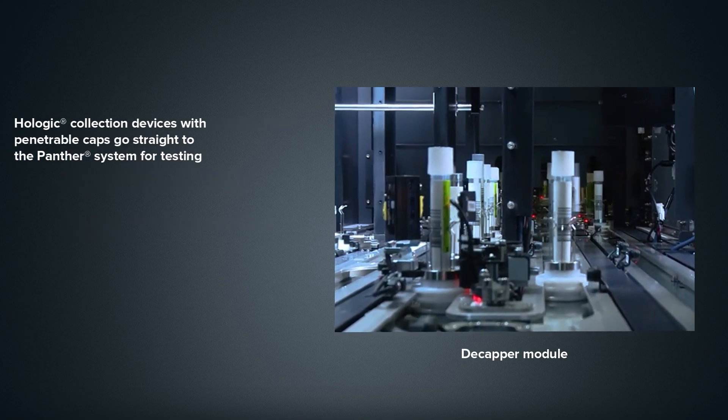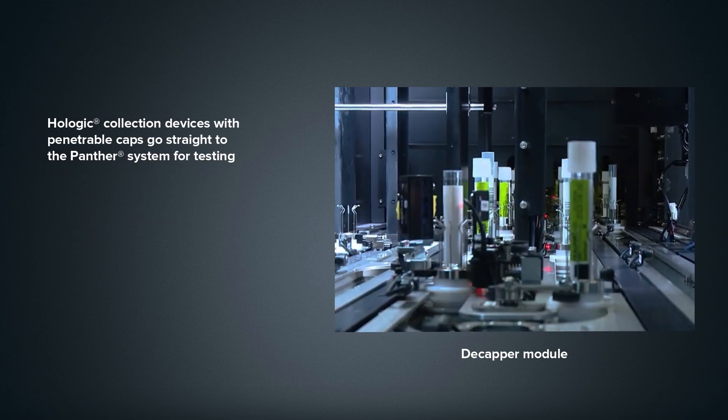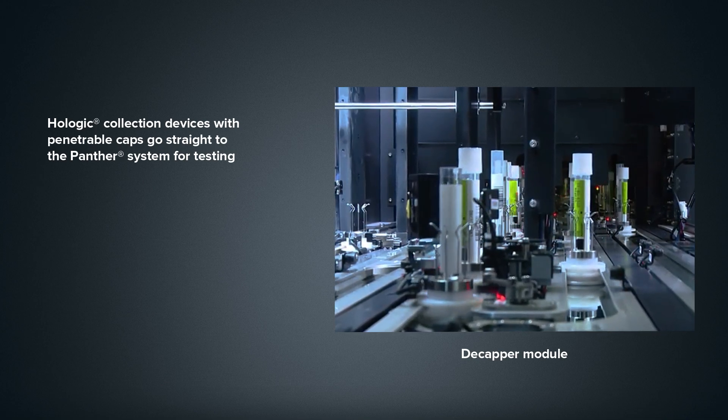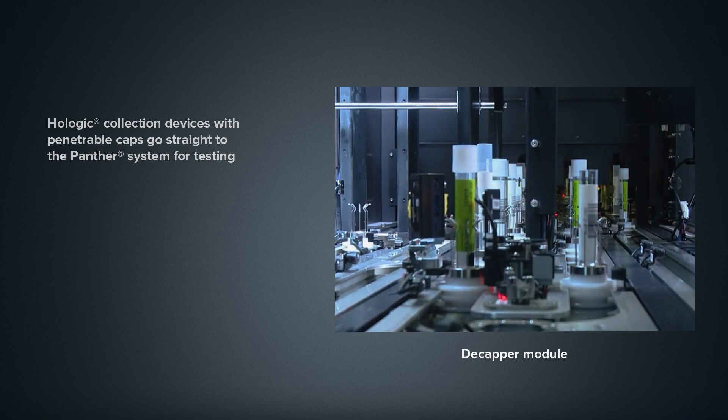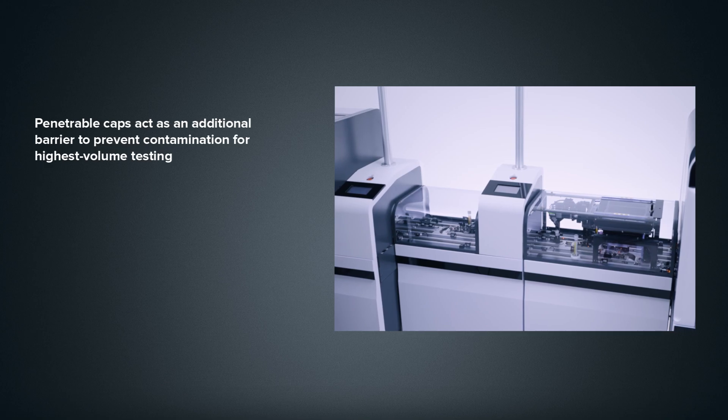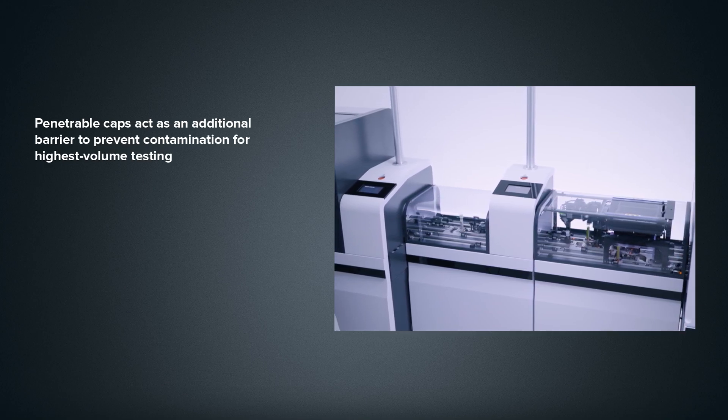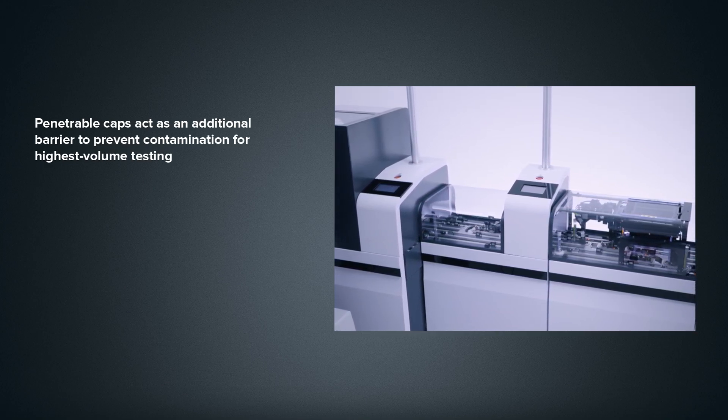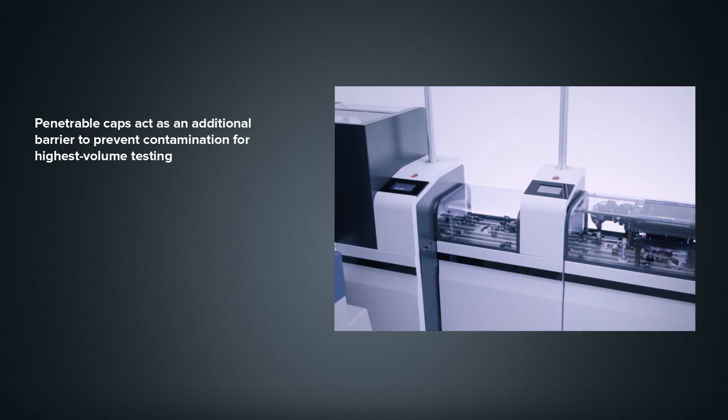Alternatively, tubes with Hologic's penetrable caps pass through the Decapper and are delivered directly to the Panther system for processing. These capped tubes not only expedite testing, but act as an additional barrier for samples as they are being processed. This barrier prevents contamination when running your highest volume STI and Women's Health assays.